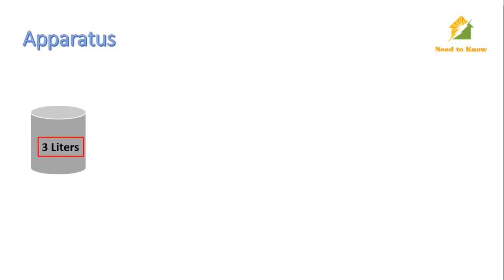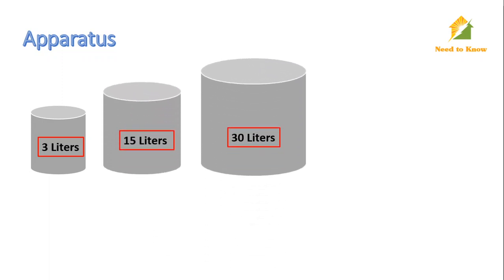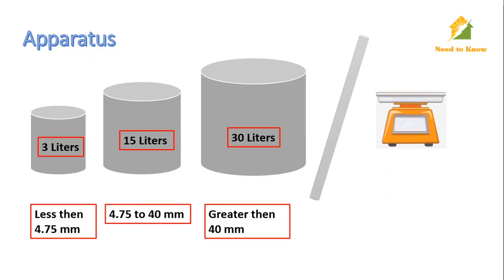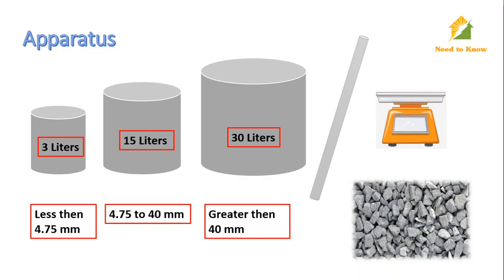The apparatus used for measuring the bulk density of coarse aggregate includes a metal cylindrical bucket of 3-liter, 15-liter, and 30-liter capacity, depending upon the size of the aggregate. For particle size less than 4.75 mm, we use the 3-liter bucket. For particle size ranging from 4.75 to 40 mm, we use the 15-liter bucket. For particle size greater than 40 mm, we use the 30-liter bucket. We also need a tamping rod, weighing balance, and aggregate sample of desired size.